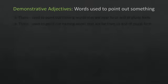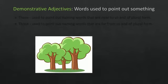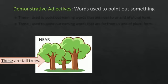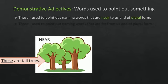As we now know that demonstrative adjectives are words used to point out something. In this image below, you can see few trees which are close to you or near to you. In that case, we write it as these are tall trees. These is used to point out naming words that are near to us and of plural form.